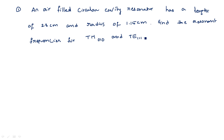There are an infinite number of modes present over a circular waveguide or any type of waveguide when a wave is traveling. Among these infinite number of modes, you are asked to calculate the resonant frequency for two modes: TM010 and TE111. Here, 010 and 111 specify the values of m, n, and p.